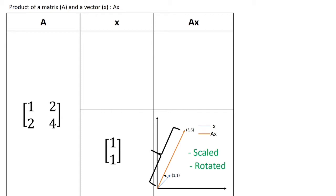So, you multiplied a matrix and a vector and you got the resultant to be scaled and rotated. Let's now see what case 2 has to tell us.